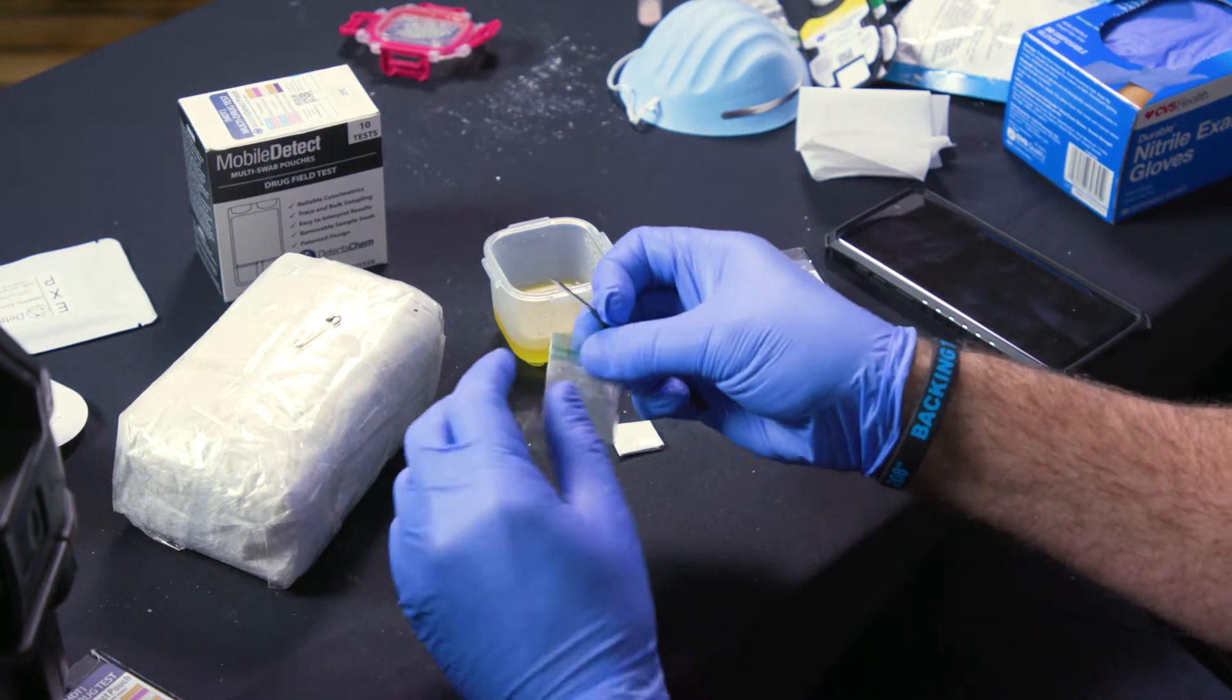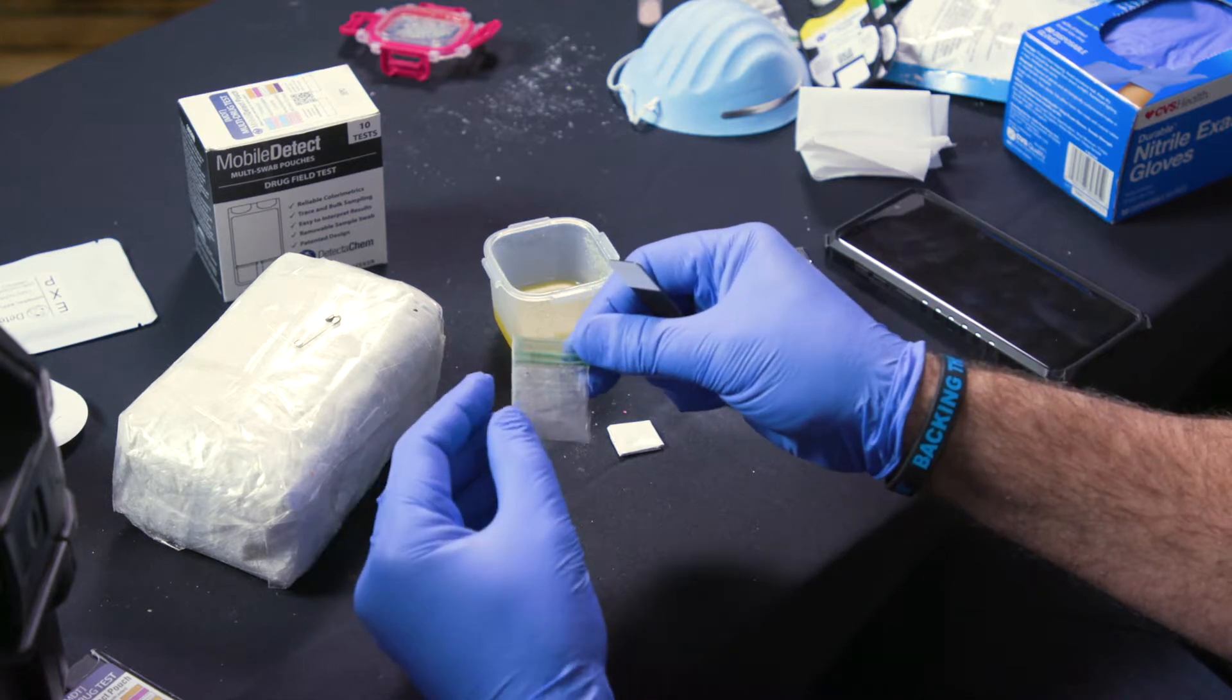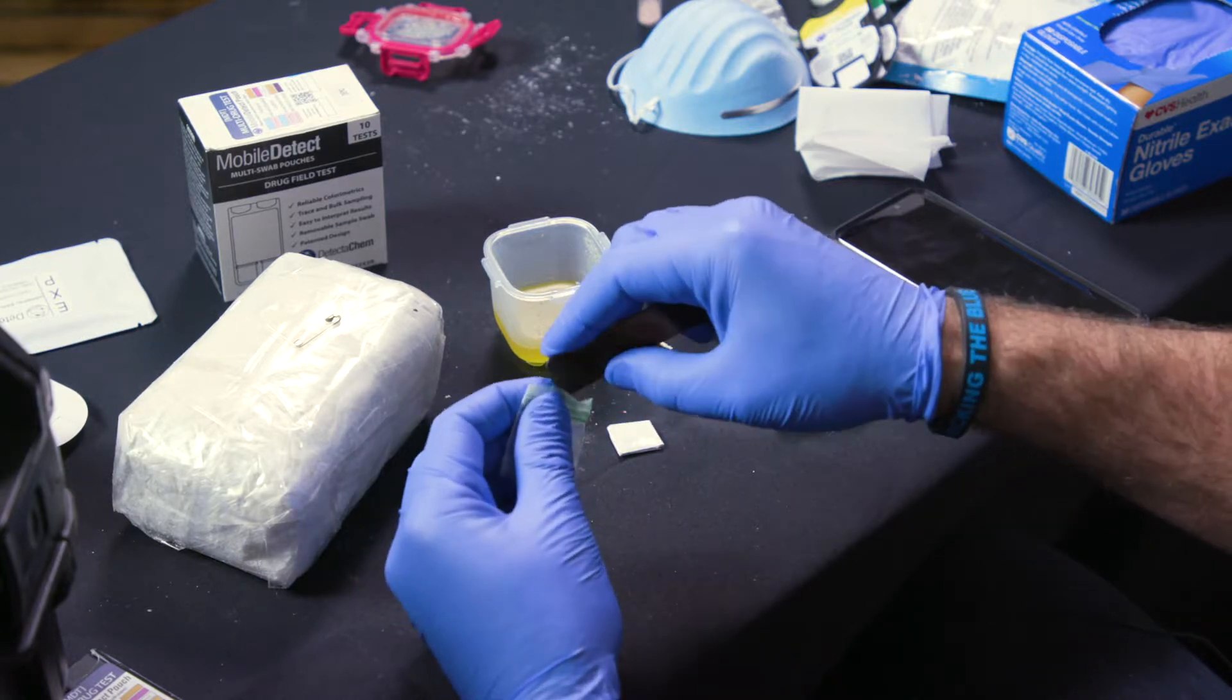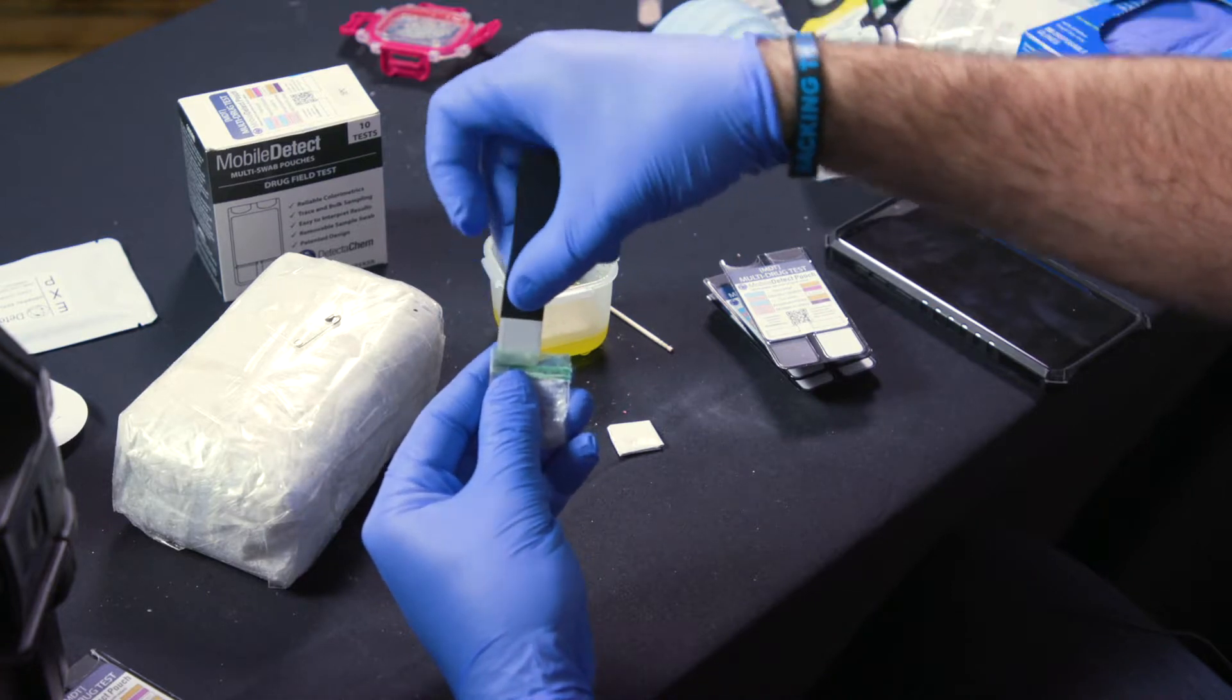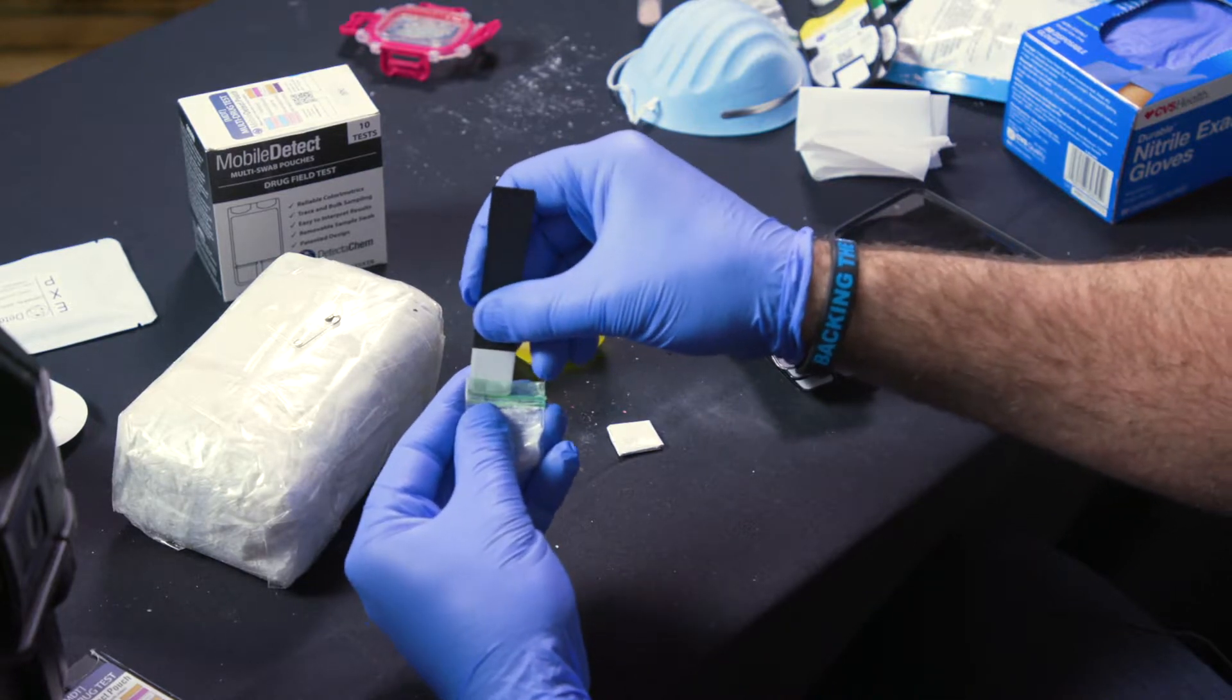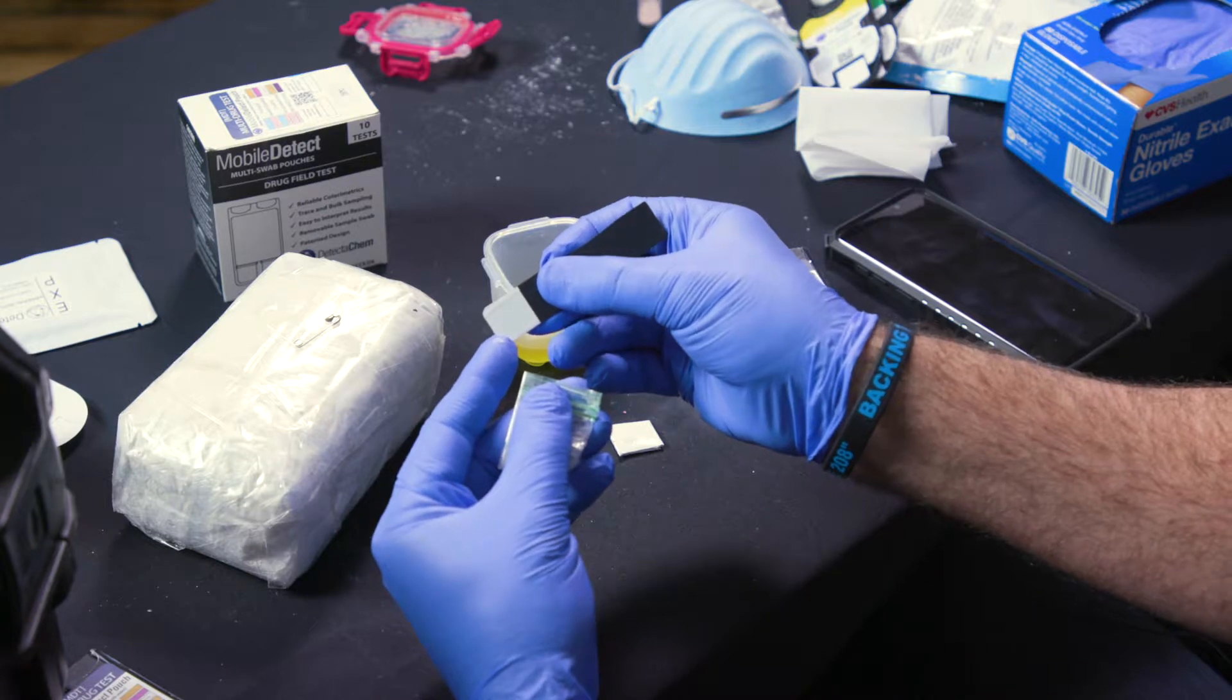For a small ziplock bag or really any kind of ziplock bag these are pretty straightforward to do without having to go into the bulk sample. What you want to do is you want to open up just the top and you want to insert the swab right into the top of the ziplock before the seal. Just swab that right there. There's almost always enough residue there to be able to get a very solid detection.